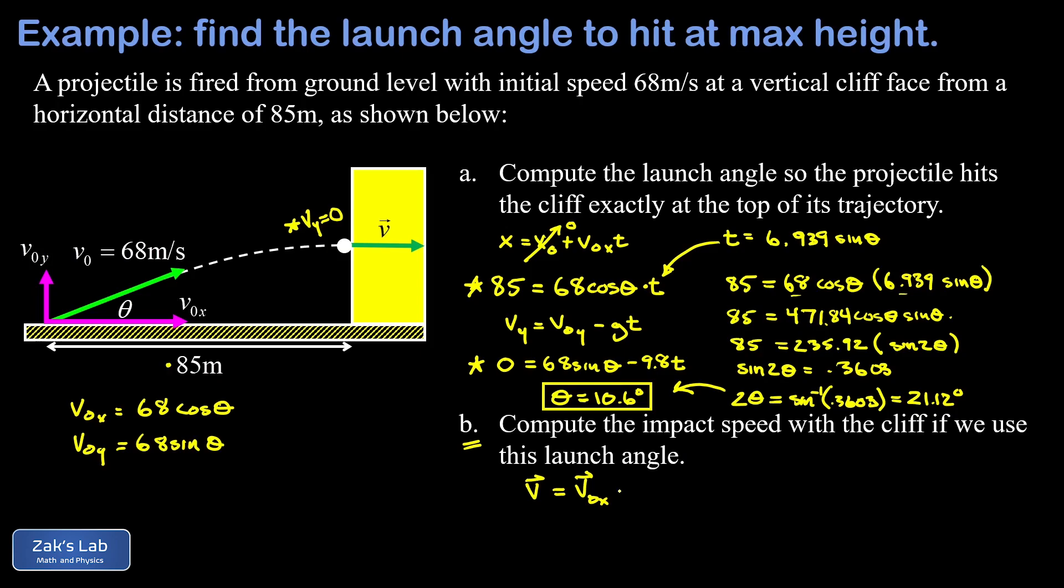This x velocity never changes, so the x velocity at the impact is the same as it was at the beginning. This means our speed, which I'll write as a v with no vector over the top, is going to be 68 cosine of theta. And we just found that as about 10.6 degrees, and this gives us an impact speed of 66.8 meters per second. And we're done.